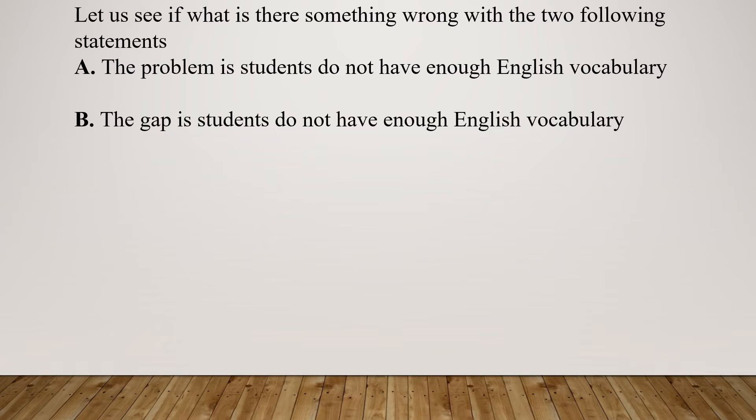So let us see here if there is something wrong with the two following statements. The first statement says the problem is students do not have enough English vocabulary. The gap is students do not have enough English vocabulary. So it's the same sentence, but the two difference is that I'm saying in the first one that it's a problem and the second one it's a gap. So which one is correct, the first one or the second one? Let's see.